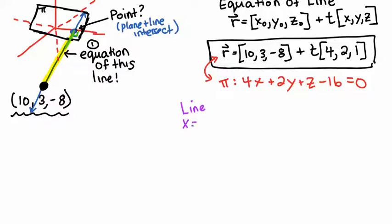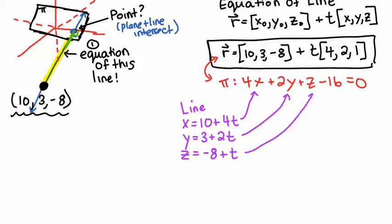So our line would be x equals 10 plus 4t, y equals 3 plus 2t, and z equals negative 8 plus t. So there's our parametric form. And now we can just sub our x into here, our y into there, and our z into there to solve for t.